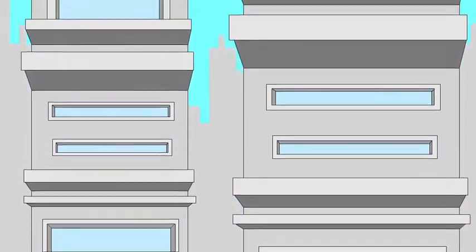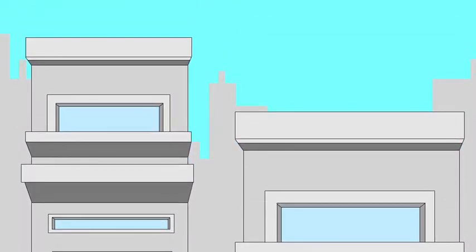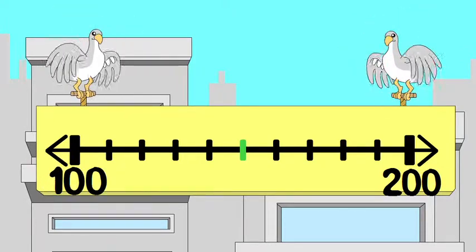Here are some useful things to know. You can show any number on a number line. Numbers to the right have a greater value than numbers to the left.